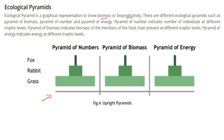There are different ecological pyramids: the pyramid of biomass, the pyramid of number, and the pyramid of energy, as you can see here.